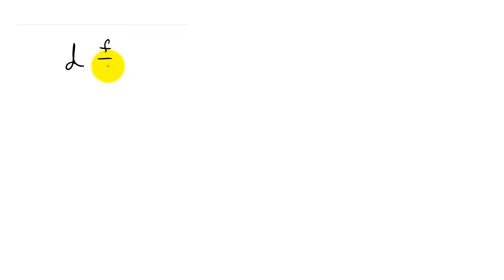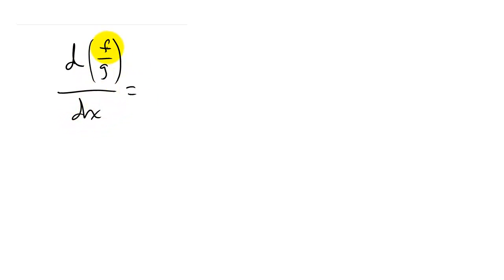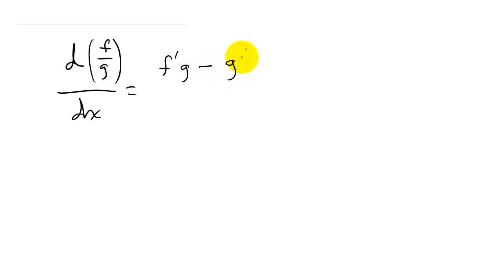So what does the quotient rule say? We've got the derivative of f over g with respect to x, where f is the numerator and g is the denominator. The quotient rule says it's the derivative of the numerator times the denominator, minus the derivative of the denominator times the numerator,